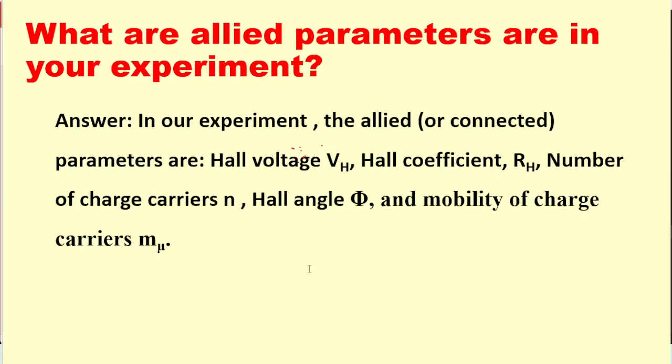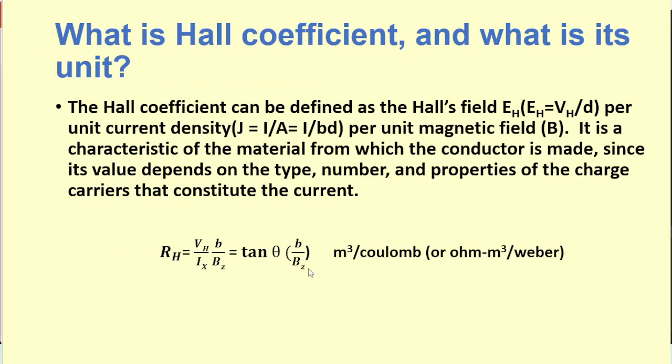What are the allied parameters in your experiment? In our experiment, the allied or connected parameters are Hall voltage, Hall coefficient RH, number of charge carriers n, Hall angle phi, and mobility of charge carriers mu. What is Hall coefficient and what is its unit? So Hall coefficient can be defined as the Hall field EH per unit current density per unit magnetic field B. It is the characteristic of material from which the conductor or semiconductor is made of, and it depends on the type, number, and properties of charge carriers that constitute the current. And this is the formula we have already discussed.